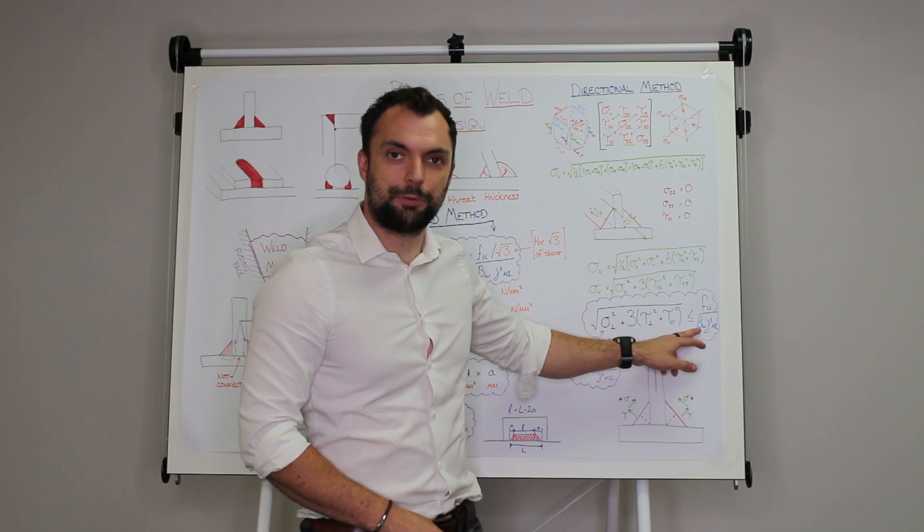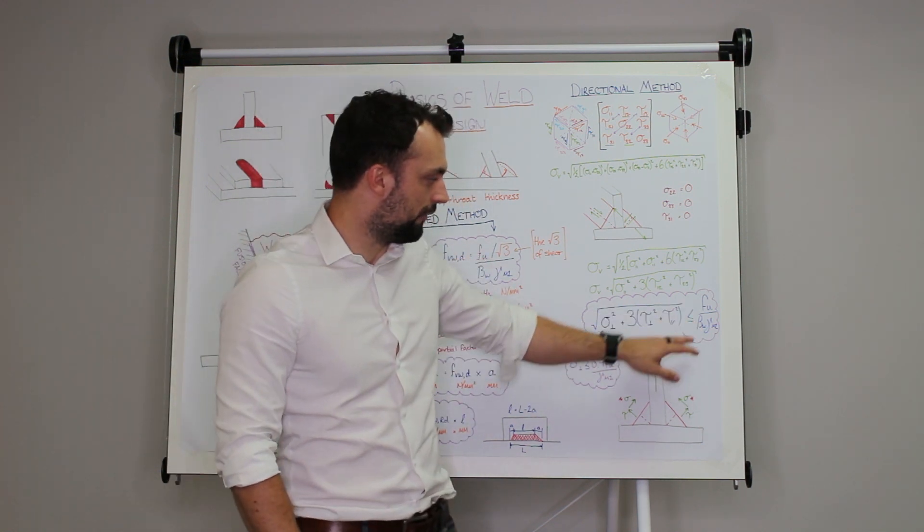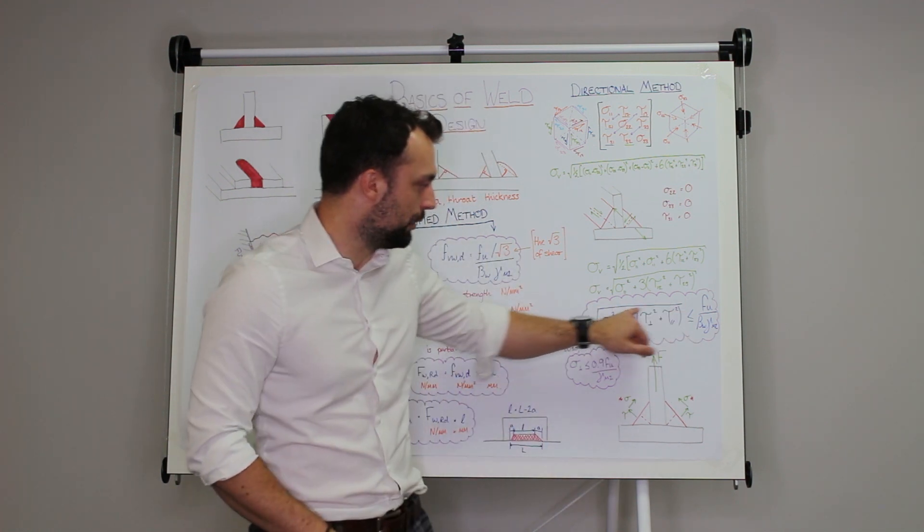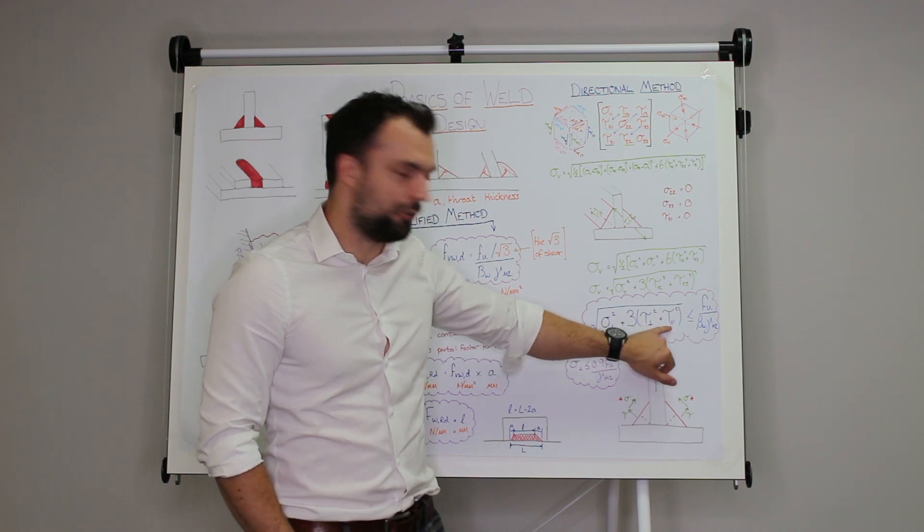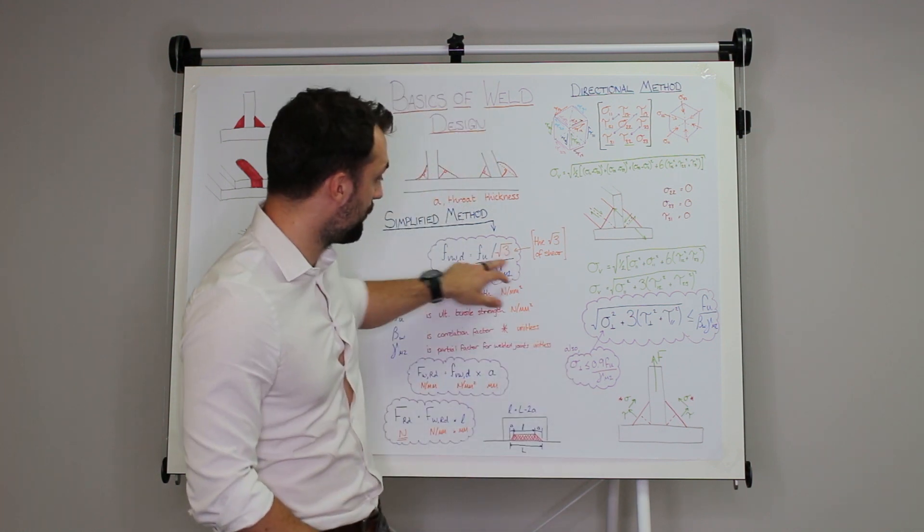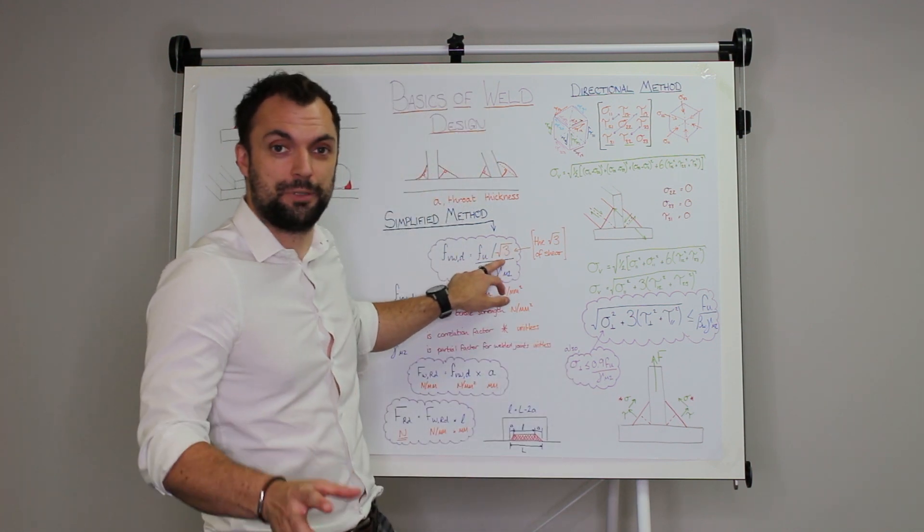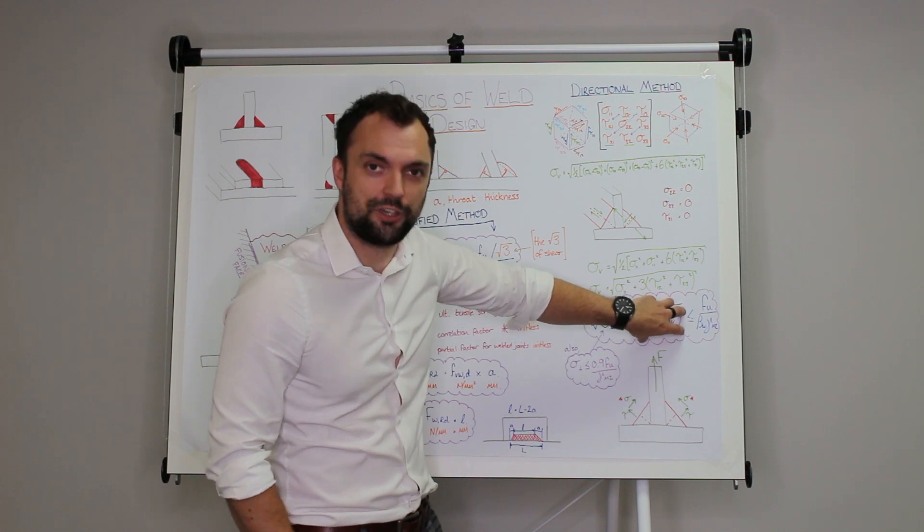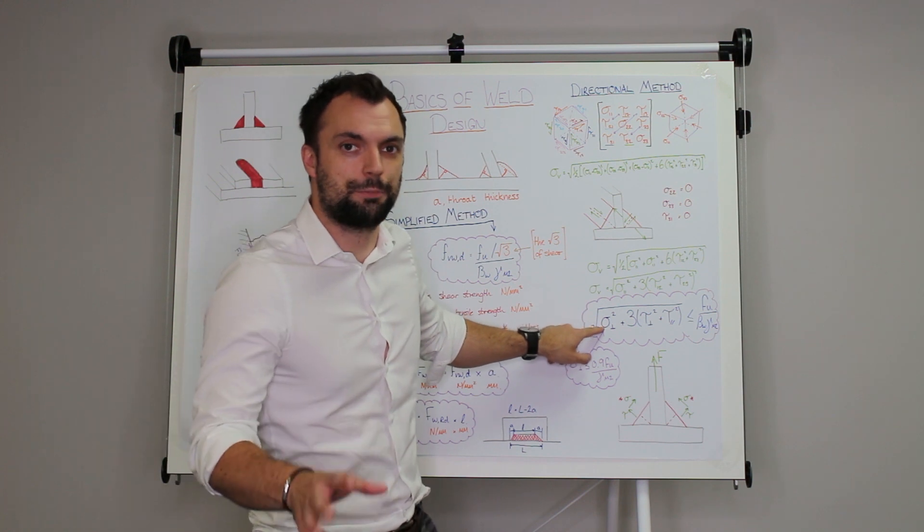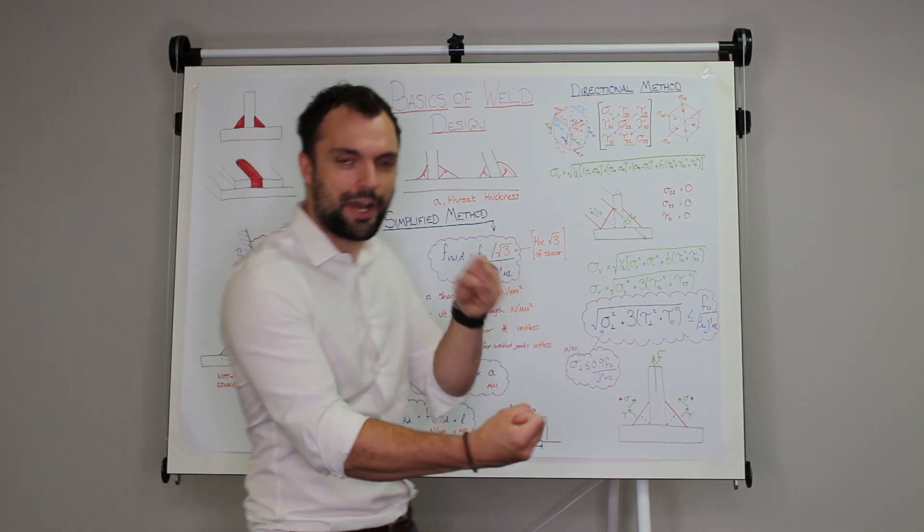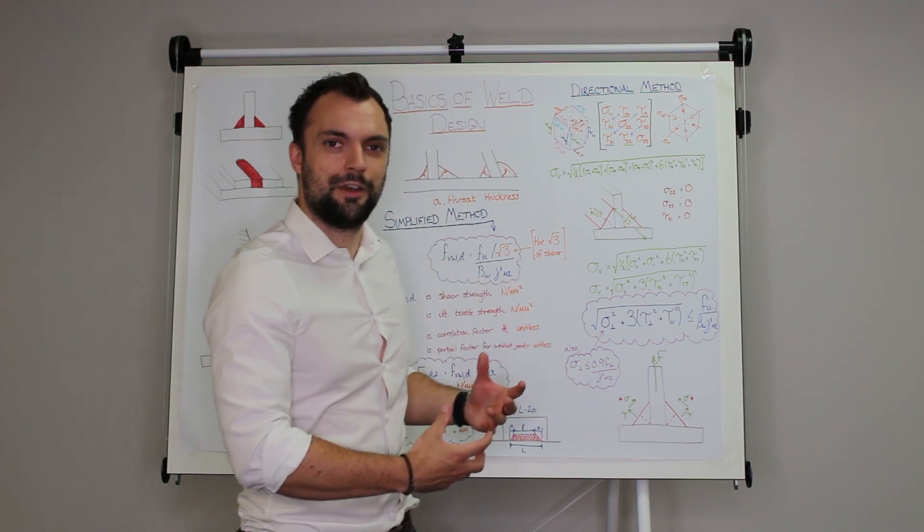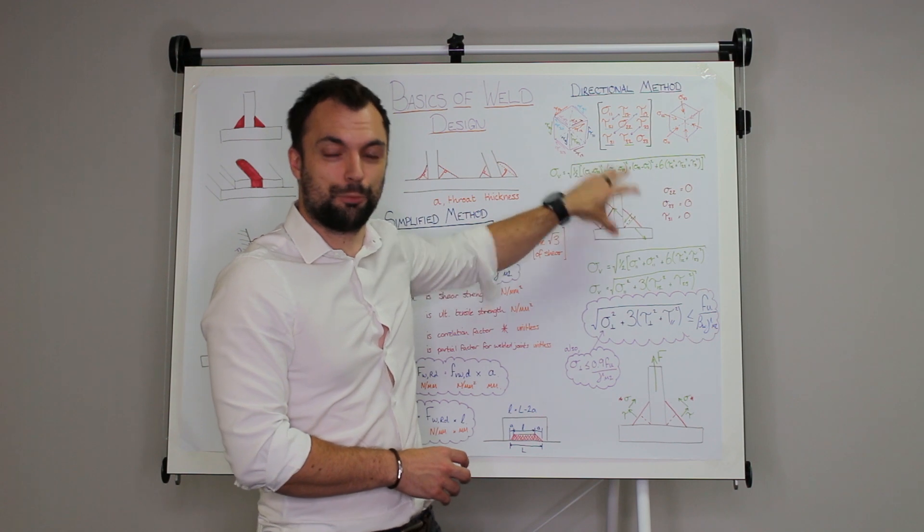And it uses the same expression that we had over here with the fᵤ over beta w gamma m2 except now the root 3 is gone because the root 3 is included in here and it's factored up only on the shear stresses. So the way that this gets more economy out is because this root 3 that was applied to the whole equation in the simplified method is now only applied to the shear stresses and this direct stress here doesn't have to have that three factor applied to it. So you can have more direct stress than you can have shear stress and you'll still be able to carry more of this stress without actually rupturing the weld.